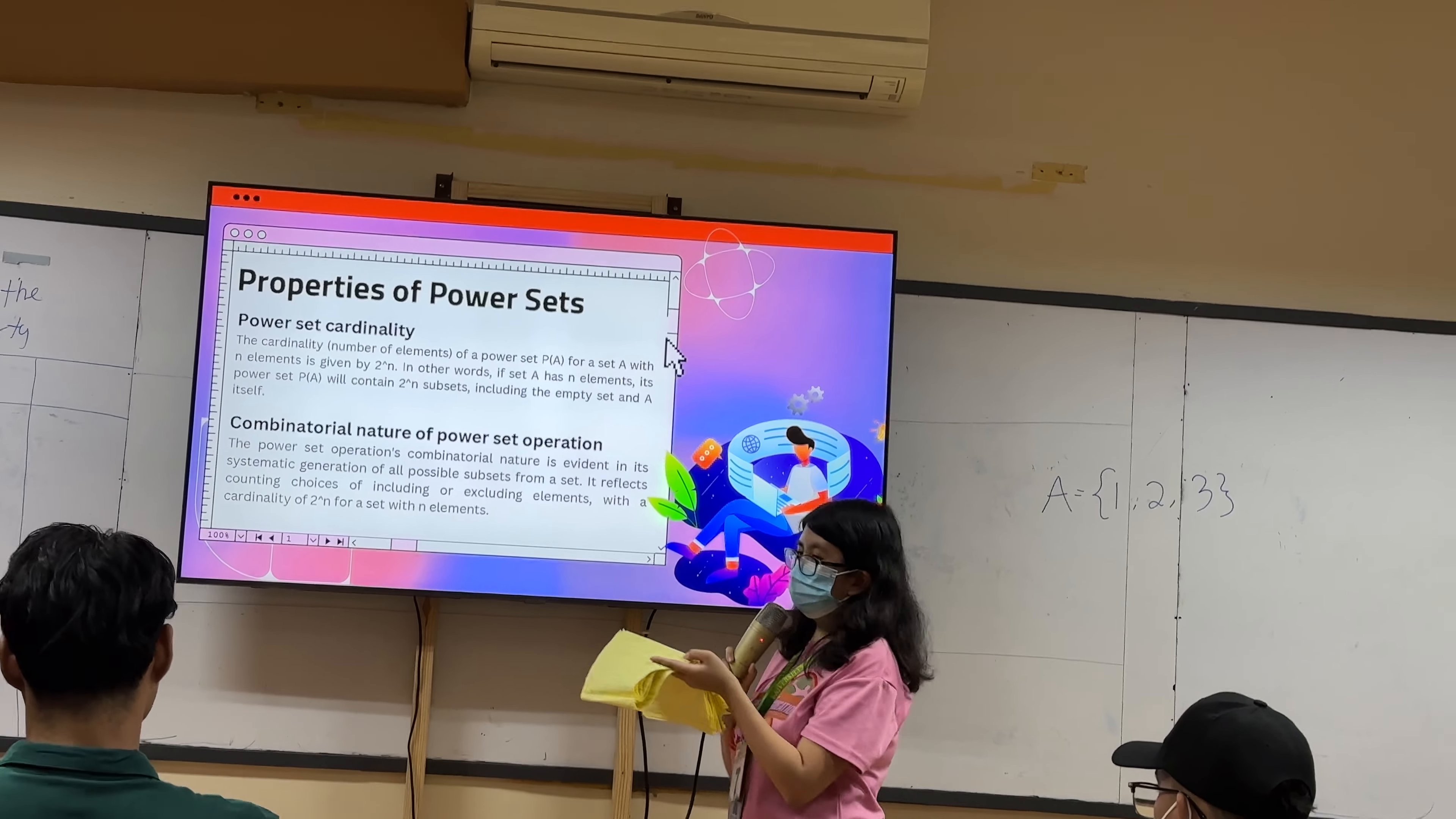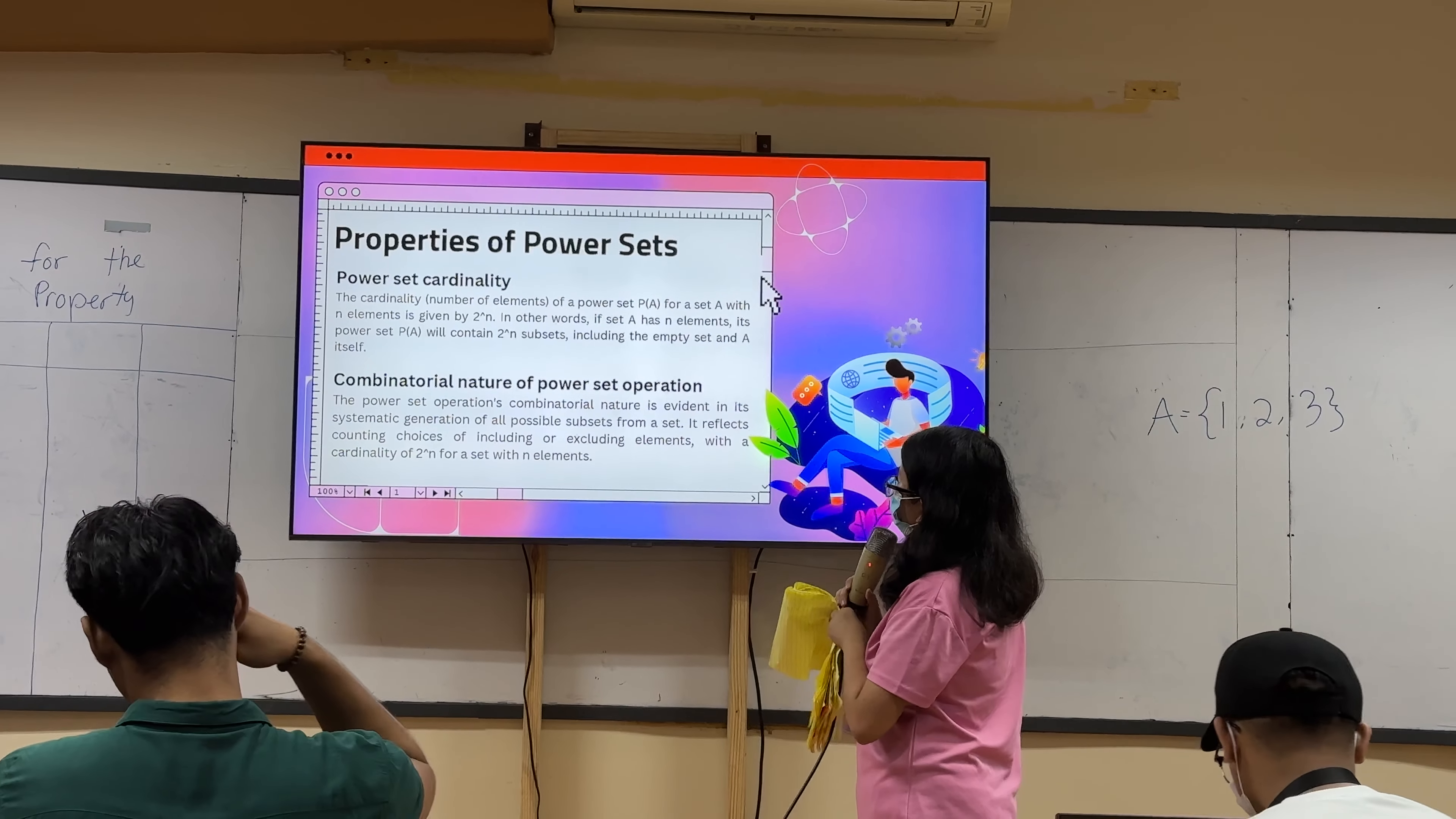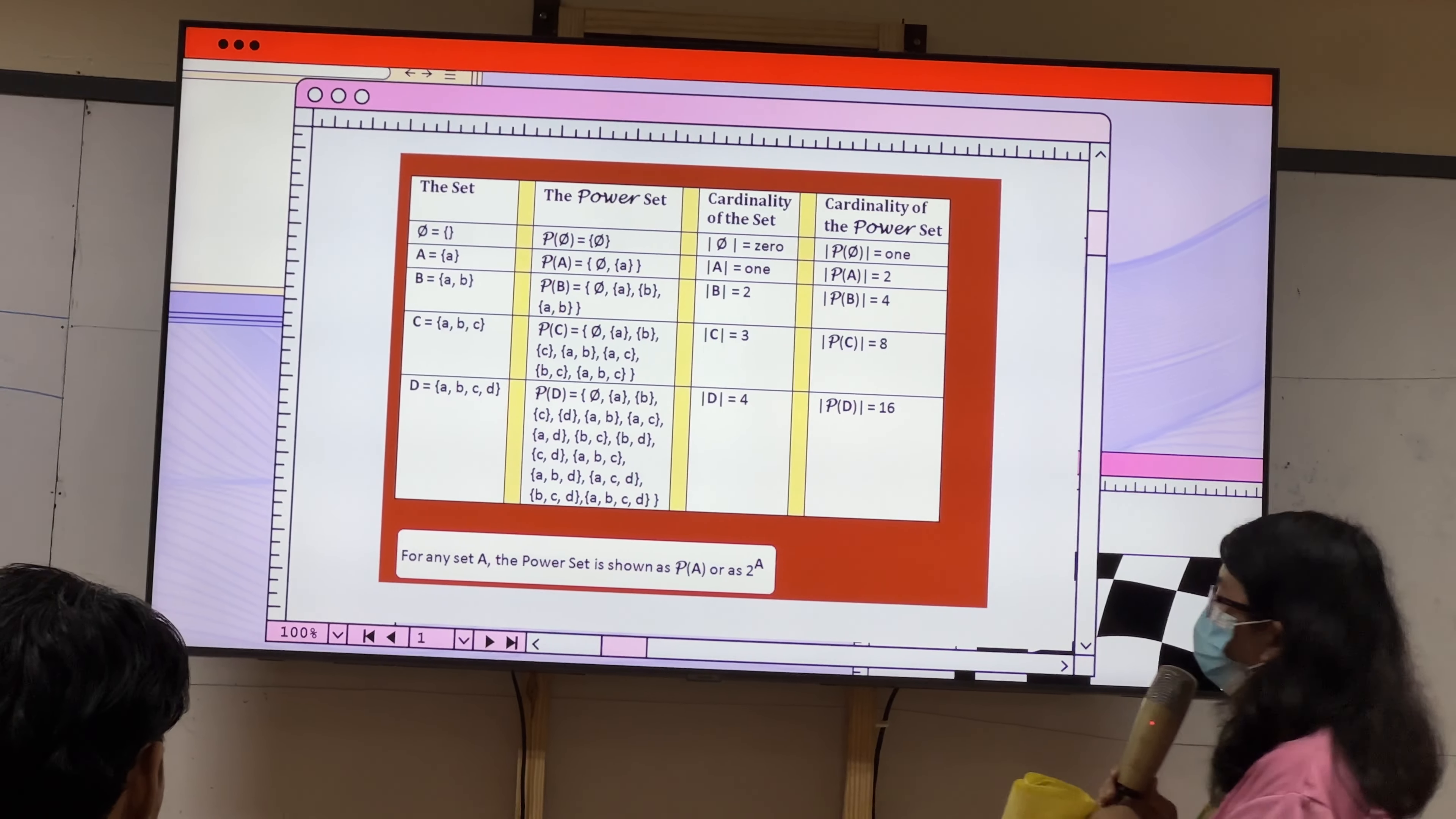Properties of power sets. We have the power set cardinality and combinatorial nature of power set operation. The power set cardinality is derived from the formula 2 to the power of n, where n is the number of elements, including the empty set and set A itself. The combinatorial nature of power set operation is evident in its systematic generation of all possible subsets from a set.